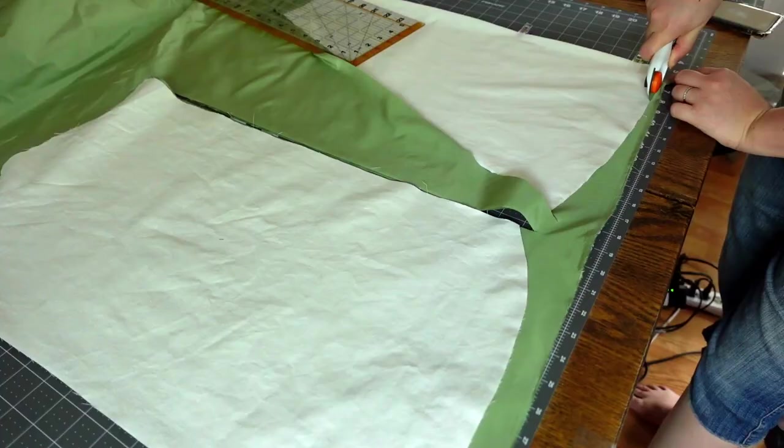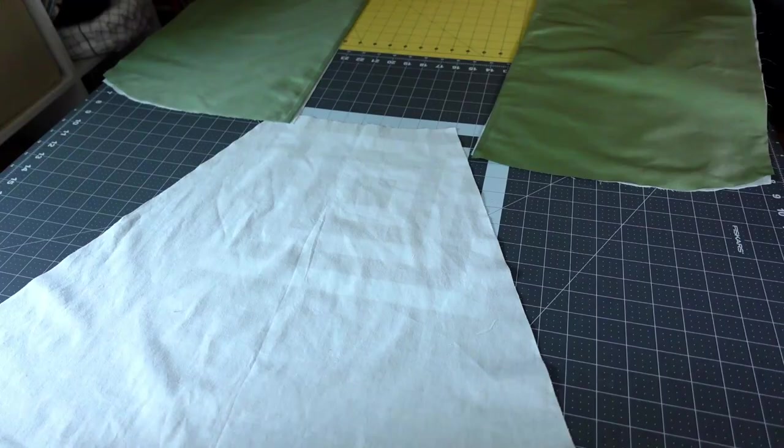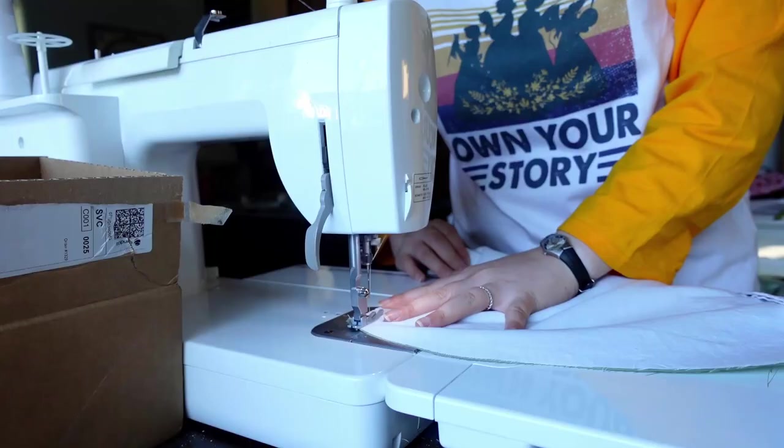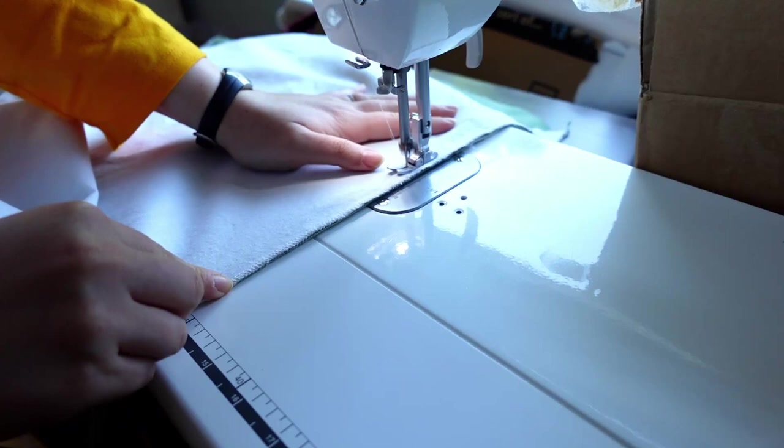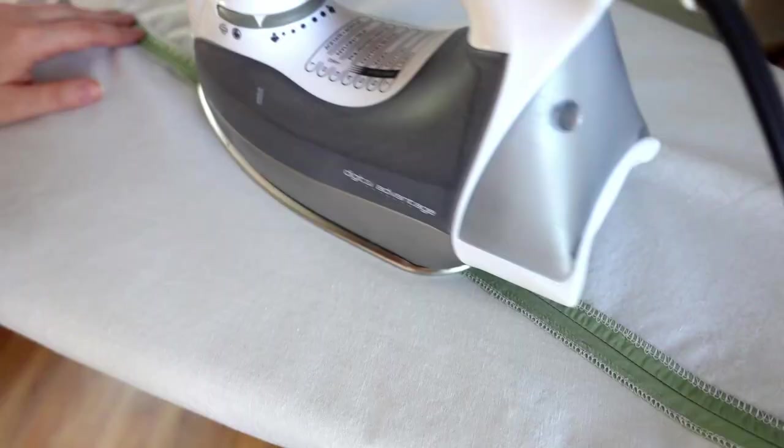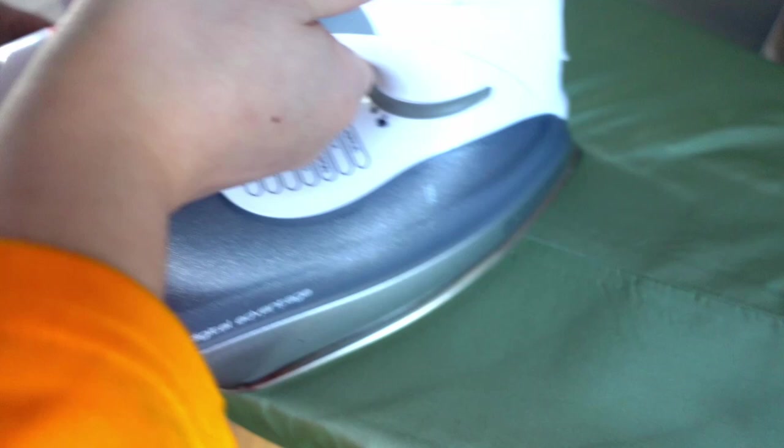Happy with the fit, I used the mock-up to cut out the silk taffeta. To keep things tidy, I used my serger to flatline the silk to the cotton interlining before sewing the panels together with a half inch seam allowance. As always, I pressed all of my seams flat, then open before pressing the seams from the front as well for good measure.